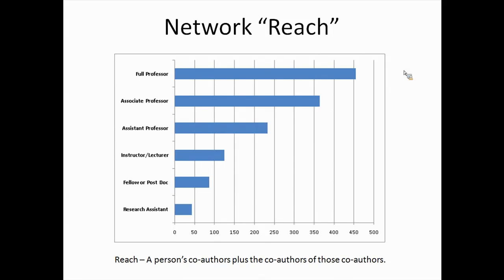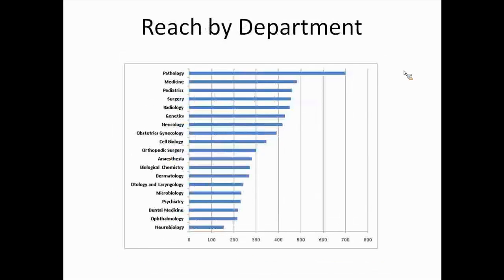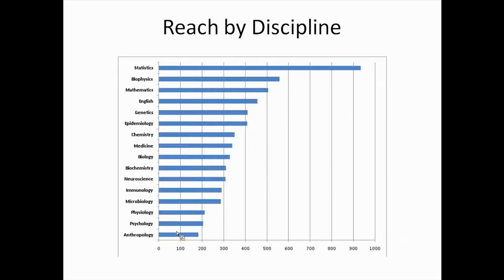One of the network metrics we look at is REACH — this is co-authorship reach, meaning the number of co-authors a person has plus the number of co-authors their co-authors have. At Harvard, a brand new research assistant has about 45 people in their network; a full professor has 450. So you go up an order of magnitude in network size over the course of your career. There's a lot of variation — pathologists work with a lot of people because everyone who has a tissue specimen is collaborating with the pathologist.